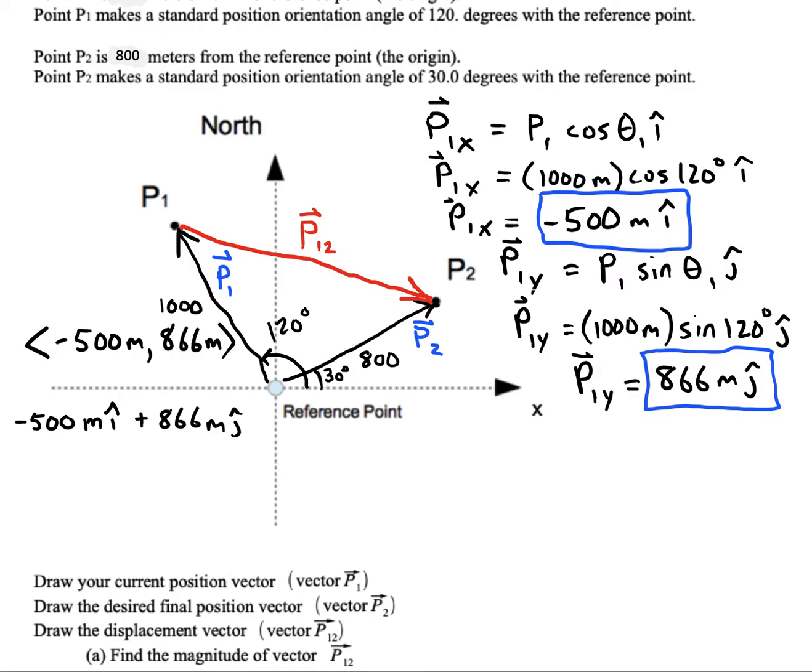I just want to do the same thing for P2. I just applied the standard component formulas for any vector. So I'll just do it for P2. It's going to be P2 cos theta 2, so that's 800 cos 30.